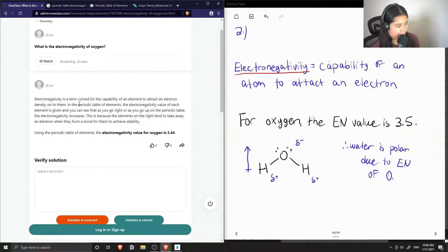Well yeah, in some periodic tables it can just be given. And you can see that as you go right, or as you go up on the periodic table, the electronegativity increases.